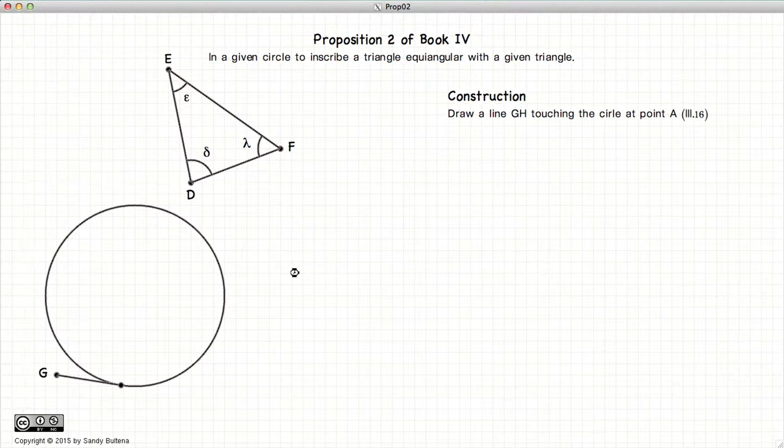So to do that, the first thing we need to do is to draw a line, GH, such that it touches the circle at point A.